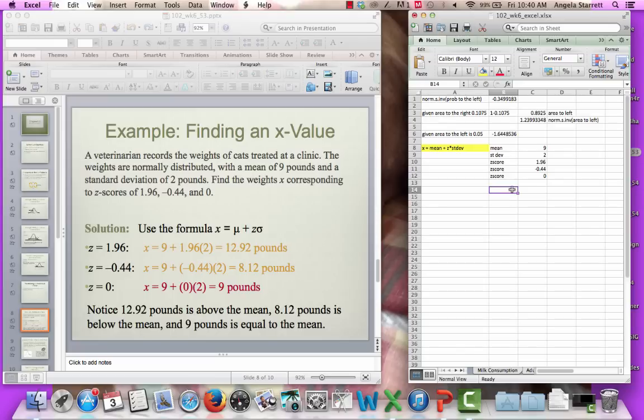We want to solve for x. What are we going to do? We're going to say equals our mean, 9, plus our z times our standard deviation. You can see here in the formula by the colors that I'm doing equals the mean, 9, plus the z-score, 1.96, times the standard deviation of 2. And I get an x of 12.92 pounds.